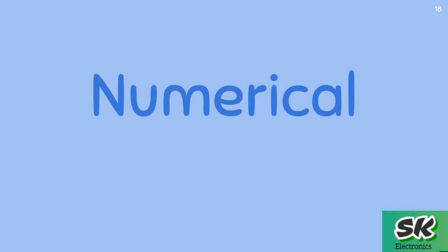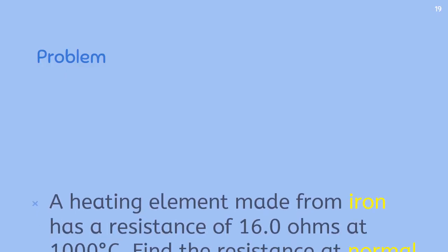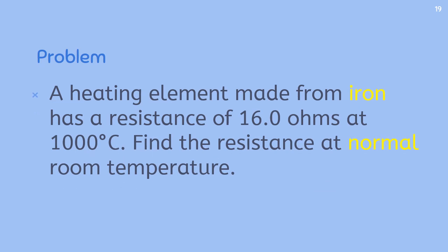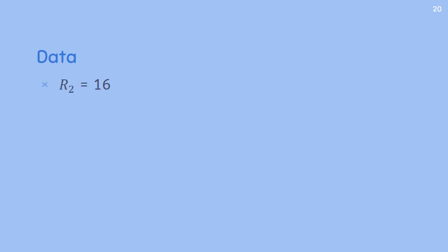Now let's solve a numerical example for better understanding. The problem states: a heating element made from iron has a resistance of 16.0 ohms at 1000 degrees Celsius. Find the resistance at normal room temperature. Known values: final resistance R2 = 16 ohms, final temperature = 1000°C, initial resistance is unknown, and alpha for iron = 0.0055 from the table.